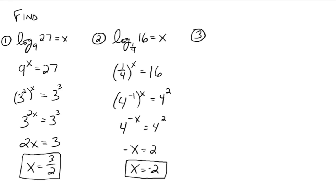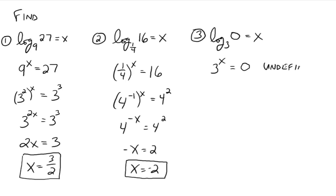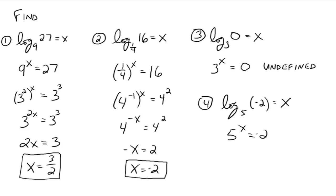What about log base 3 of 0? Setting it equal to x gives 3 to the x equals 0. There are no real numbers we can raise 3 to to make it equal 0, so this is undefined. That's why the definition requires the argument to be a positive number greater than zero. Similarly, log base 5 of negative 2 is undefined because we can't raise 5 to any real power to get a negative number. The argument of a logarithm must be a positive number — it cannot be 0 or negative.